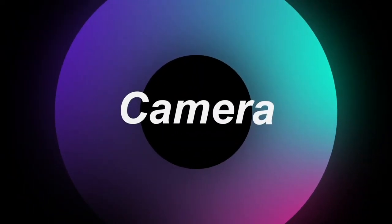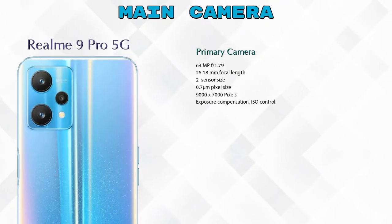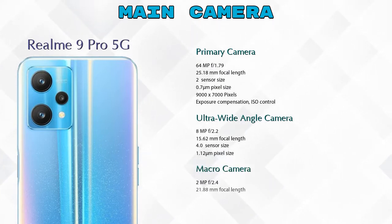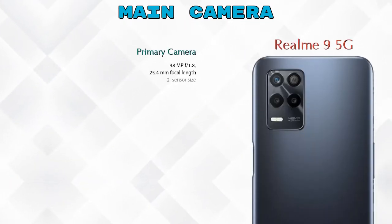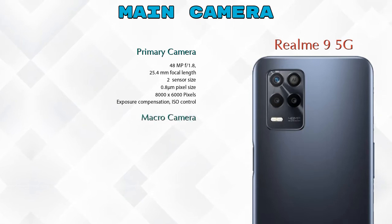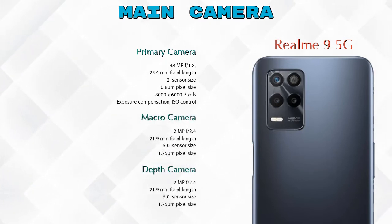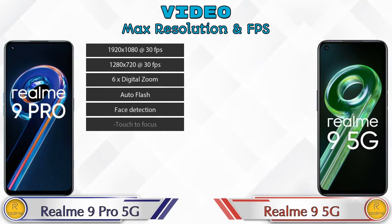Now let's look at the cameras. The Realme 9 Pro 5G has three rear cameras: a primary camera, an ultra-wide-angle camera, and a macro camera. The Realme 9 5G also has three rear cameras: a primary camera, a macro camera, and a depth camera. For video, both phones have eight different types of features available.